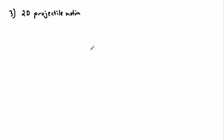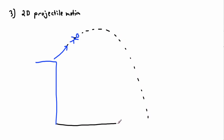Another application is 2D projectile motion. Imagine you're launched off a building at some angle — you'll follow a curved parabolic path and land somewhere below. To figure out your maximum height, time in flight, or how hard you'll hit the ground, everything depends on your initial speed and angle. That means you need to break that initial velocity into components — a horizontal piece and a vertical piece.